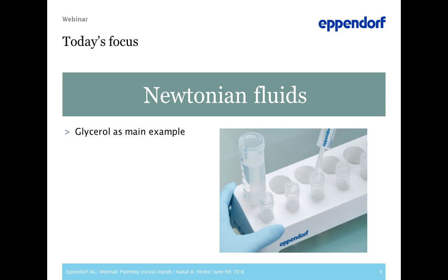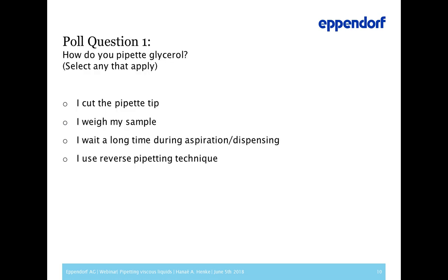We will now concentrate on Newtonian fluids because their behavior is easier to understand and more predictable. Glycerol will be the main example since most of us use it regularly in the lab. But first, I'd like you to answer a question: How do you pipette glycerol? You have four choices: I cut the pipette tip; I weigh my sample; I wait a long time during aspiration and dispensing; or I use reverse pipetting technique. Please make your choice — we'll wait a few seconds.